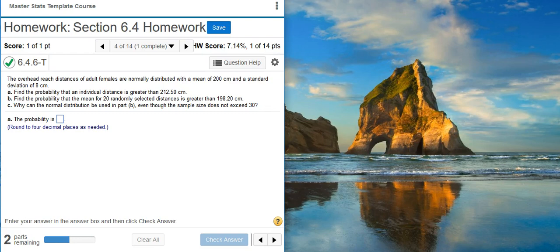Today we're going to learn how to find probabilities for different sample sizes using a non-standard normal distribution. Here's our problem statement. The overhead reach distances of adult females are normally distributed with a mean of 200 centimeters and a standard deviation of 8 centimeters.